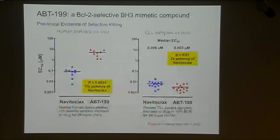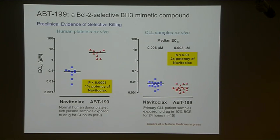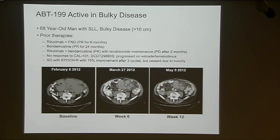ABT-199 is showing great promise both in preclinical studies. This is data from WEHI now coming out in press, looking at the effect ex vivo on platelets or on CLL samples. Although you get as good activity with ABT-199 as Navitoclax on CLL samples in culture, it has much, much weaker effect on the viability of platelets. That's really one of the key drivers for pushing ahead with the program. The clinical trials on ABT-199 have been going on for close to a year and a half now, and we're very encouraged by the data so far.